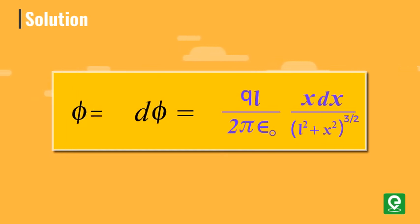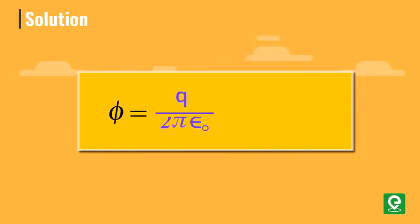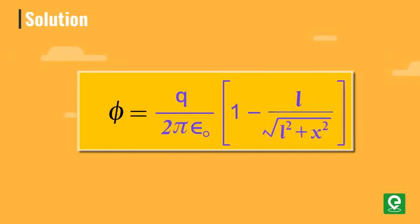We can find out total flux through disk by integrating d phi from limit 0 to r. On integrating we get total flux equal to q by 2 epsilon not into 1 minus l divided by square root l square plus r square.